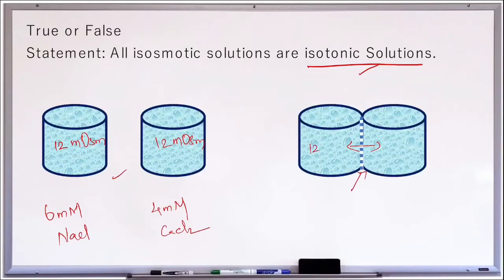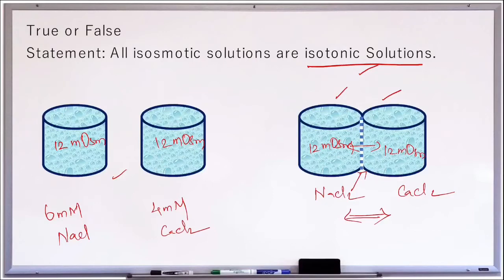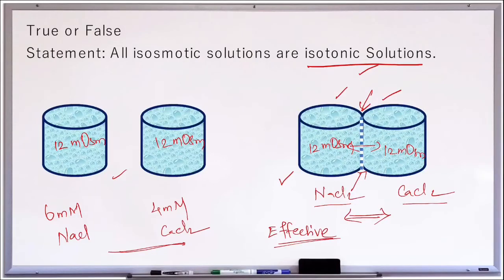If we have 12 milliosmoles of sodium chloride on one side and 12 milliosmoles of calcium chloride on the other, there should be no movement of water, provided the membrane is permeable to water but not to any of the solutes. However, if any particle is permeable to the other side, it may move across, changing the particle count and causing water movement. When discussing osmolarity we compare particle numbers alone, but tonicity considers effective osmotic pressure — produced only by impermeable solutes.